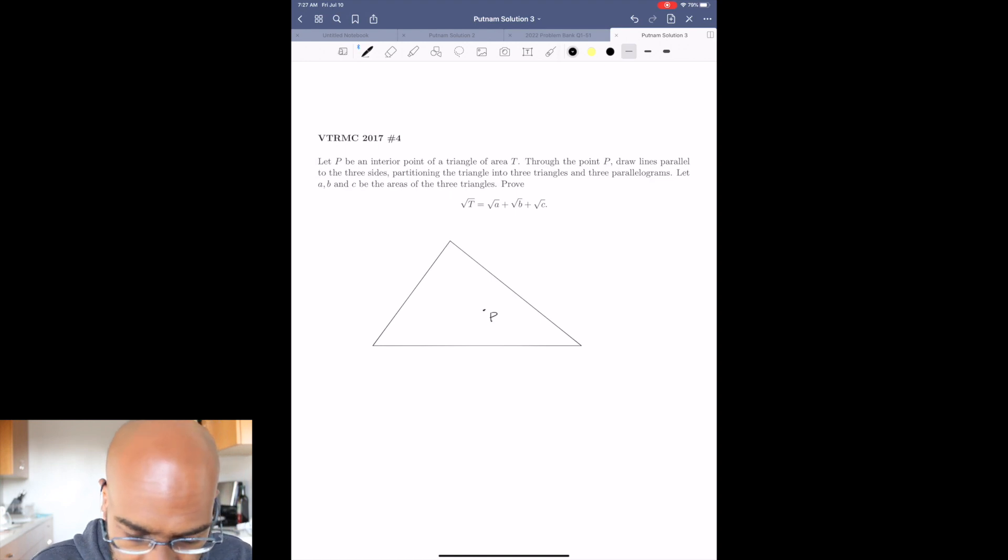And then you're given that through the point P we draw parallel lines to the three sides. So we can do something like this. I'll just draw them really roughly, so we have something like this, like that, and then like that.